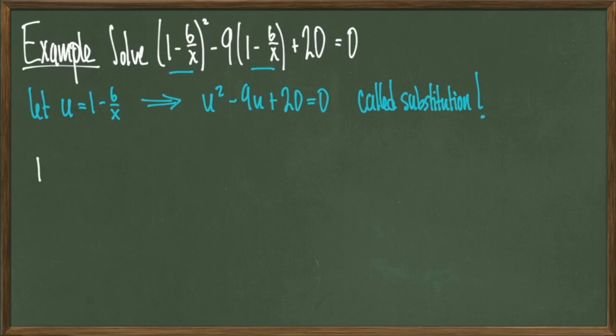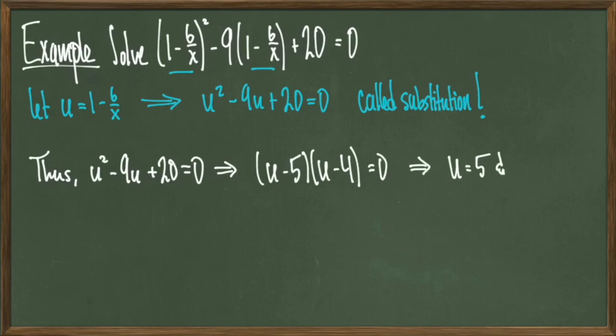Moving forward, we simply just have a quadratic equation, which we can solve by factoring, and then we find that u is equal to 5 or u is equal to 4 as our solution set. The thing is we're not quite done. We have that u is equal to 1 minus 6 over x, so we have to take each of these solutions and set it equal to 1 minus 6 over x, and then solve for x in each individual case.